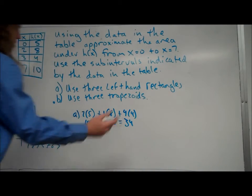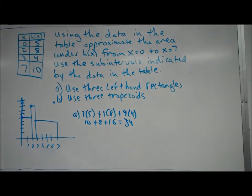Okay? So we get, using 3 left hand rectangles, we get that that area is approximately 34. Even though I don't know what the graph looks like, we can still approximate what the area under it would be.